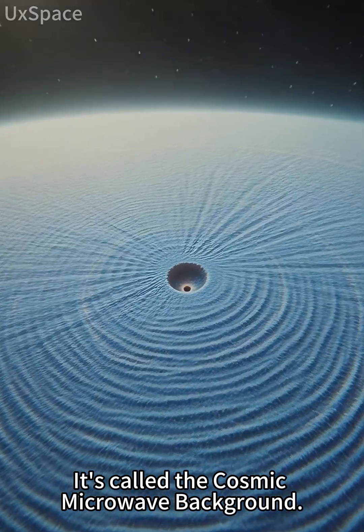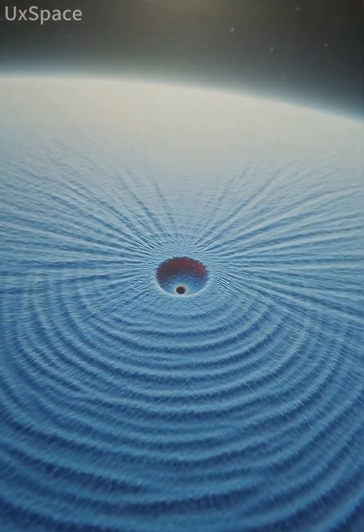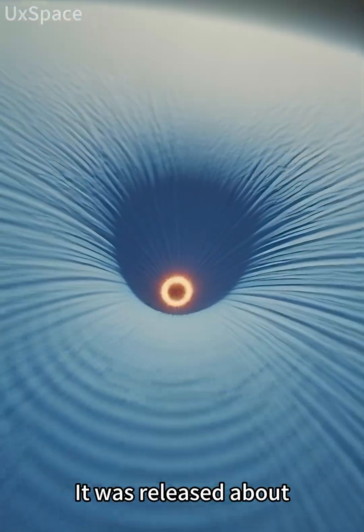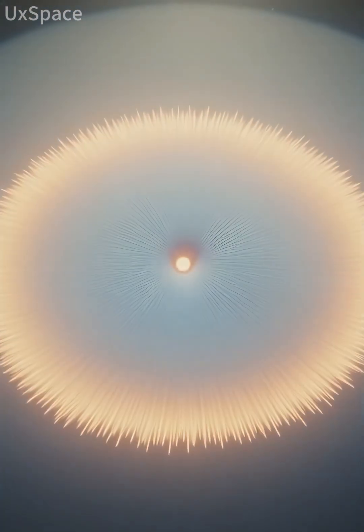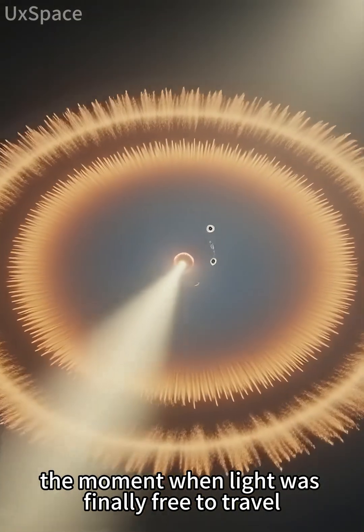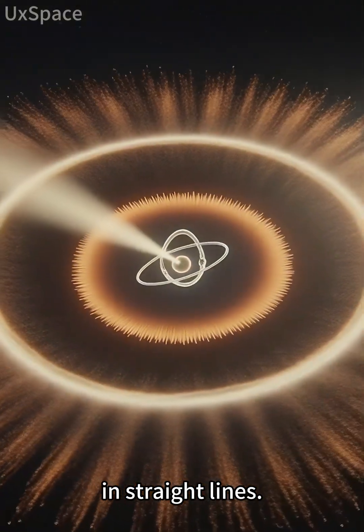It's called the cosmic microwave background. It was released about 380,000 years after the Big Bang. The moment when light was finally free to travel in straight lines.